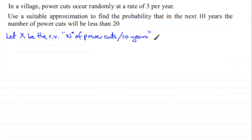And what kind of distribution would this follow? Well we've got a discrete random variable, and these power cuts are occurring at a constant rate in an interval of time, 10 years. So this would follow a Poisson distribution where x is distributed as Poisson with one parameter, the mean. And that mean would be 3 per year over 10 years, so 3 times 10, 30 power cuts is what we can expect.